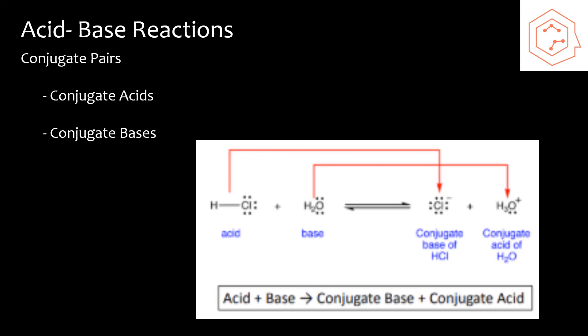Conjugate acids are acids that gain a proton during their reaction, and conjugate bases are bases that lose protons during their reaction.